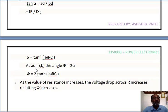AC equals CB, and the angle phi is 2α. Just put the value of alpha in this equation. Our equation becomes φ = 2 tan⁻¹(ωRC).